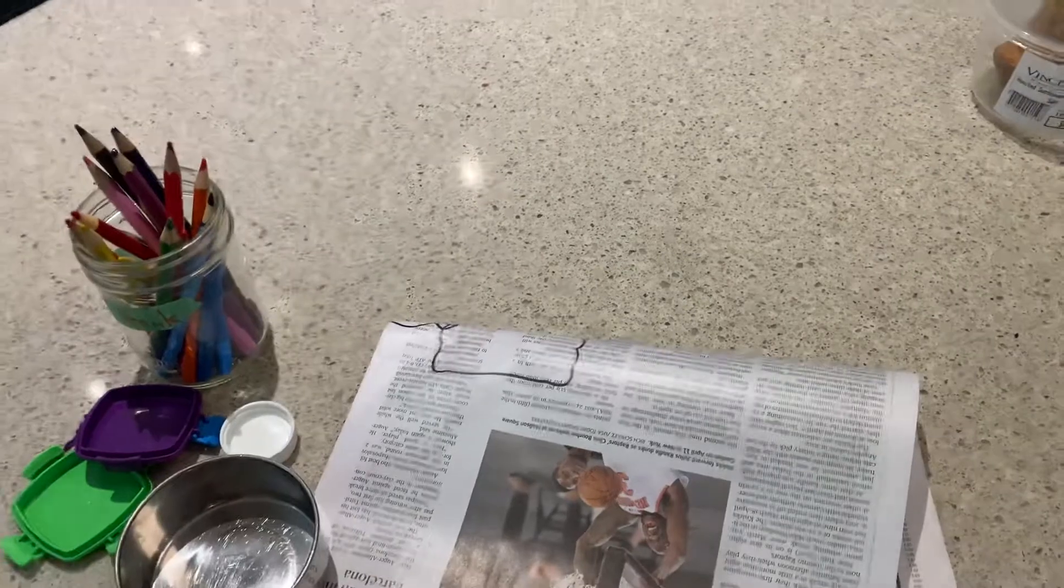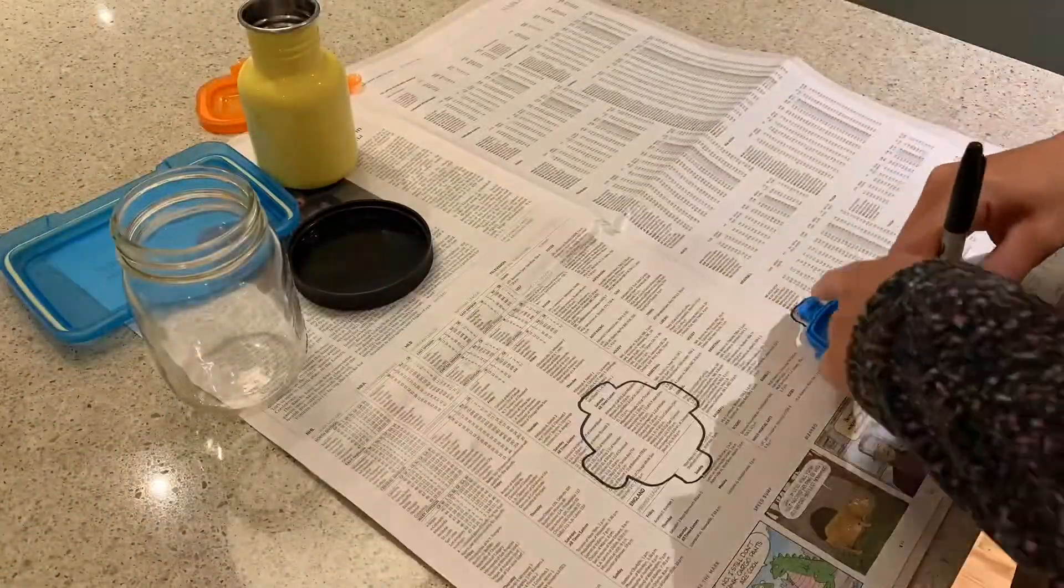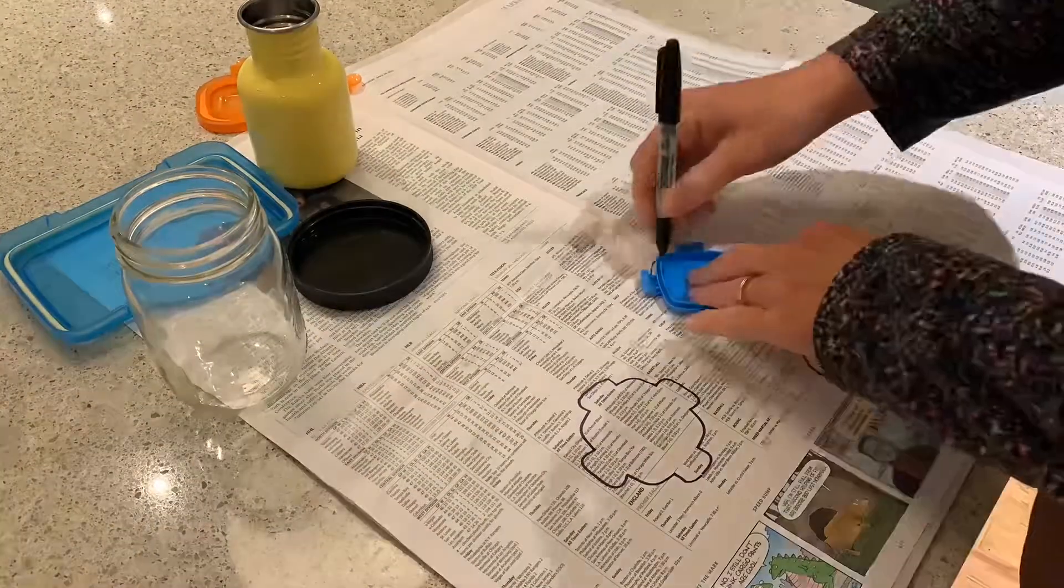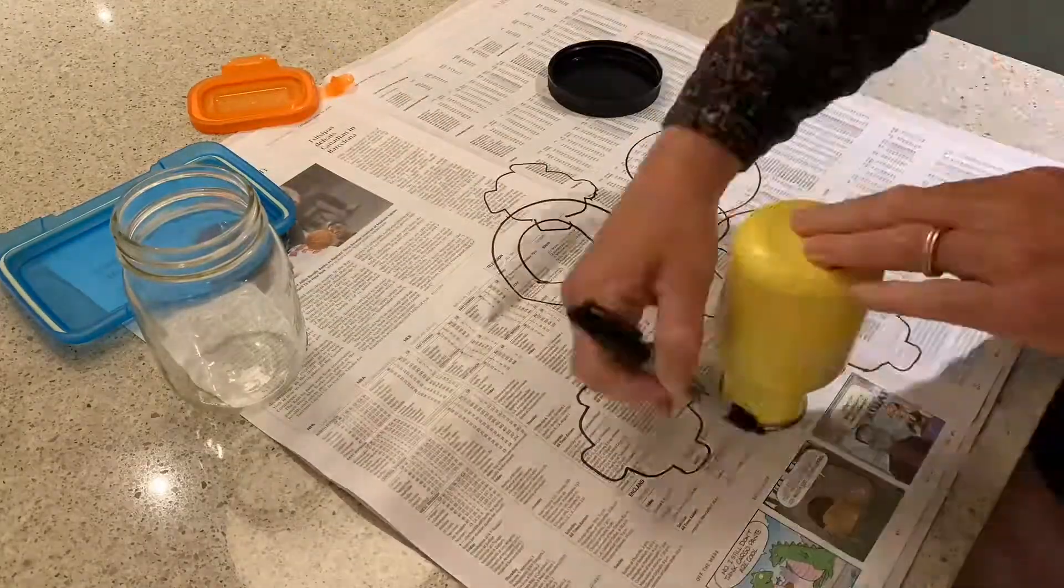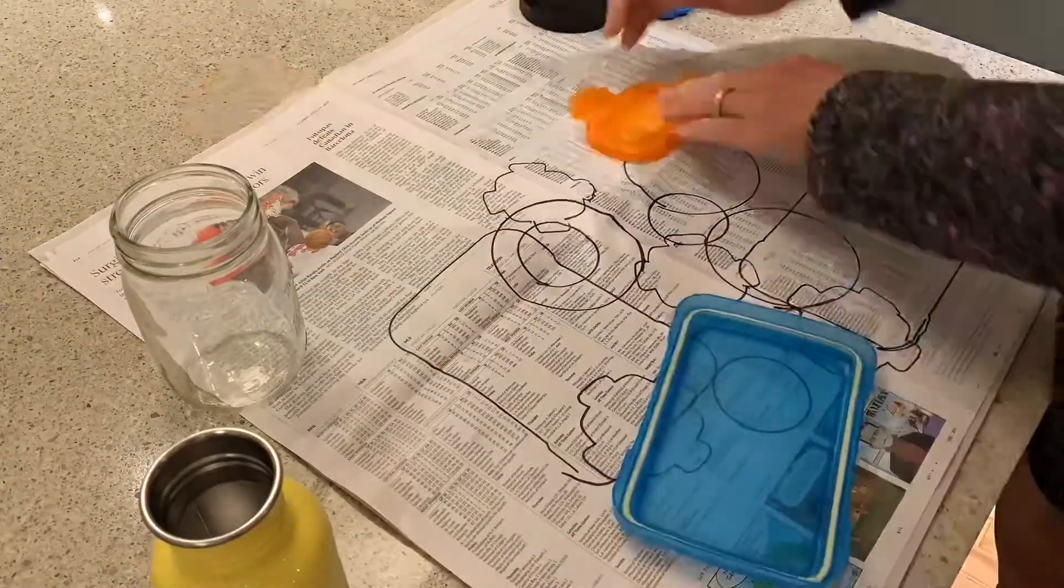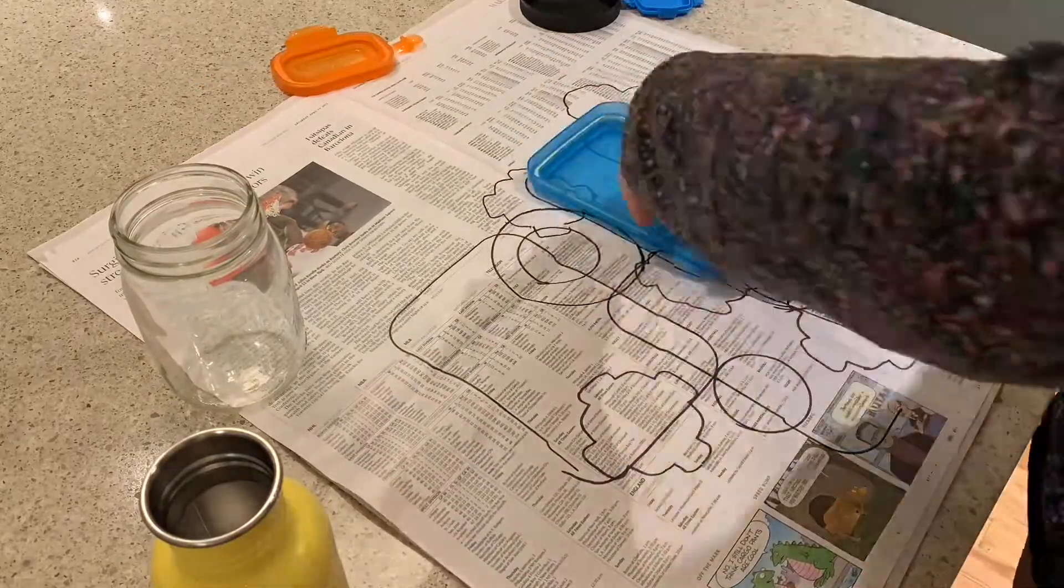Alright, now let me show you. It's very simple. Just lay your objects down one at a time. Trace, find a different spot, trace. Do at least each object three times and you want to layer them to create new shapes.